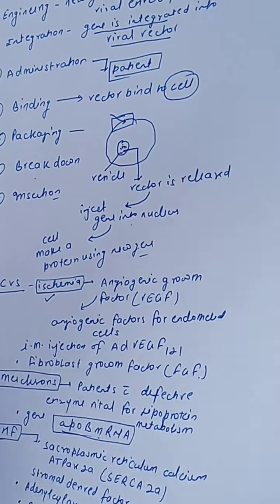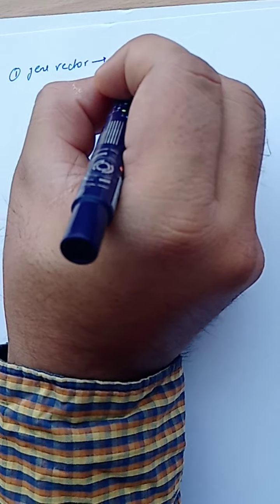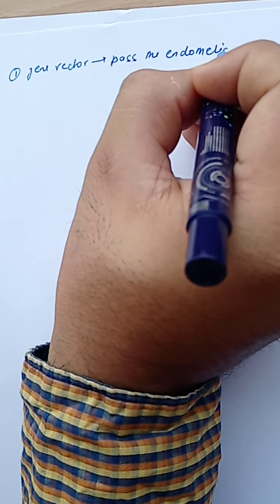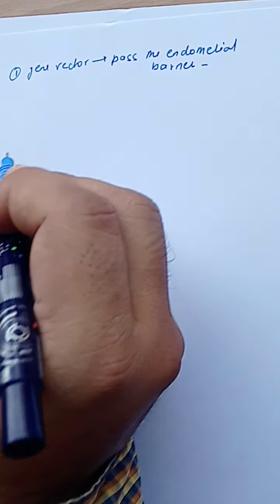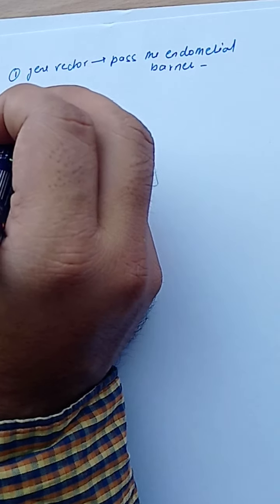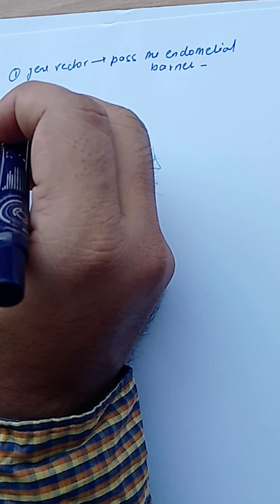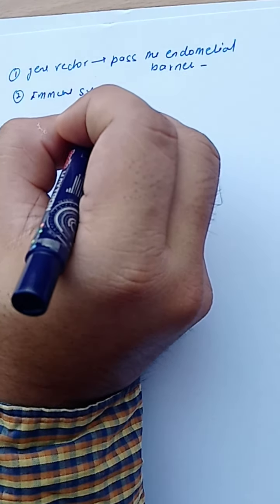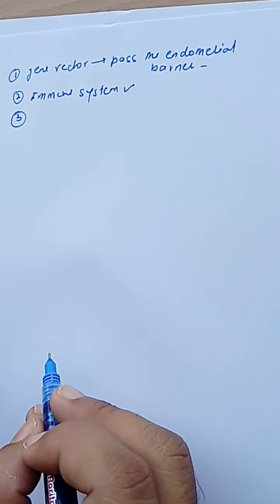There are several challenges in CVS gene therapy. First, the gene vector must be able to pass the endothelial barrier — if it cannot pass, it cannot transfer the required gene to the target cells. When injecting via IV or IM, it is always a challenge to protect the plasmid from the immune system, which can cause degradation.